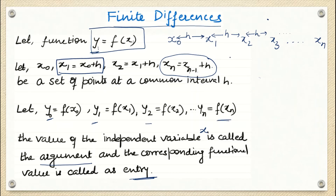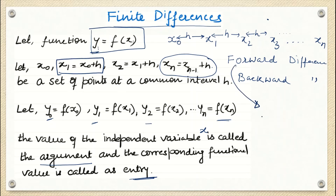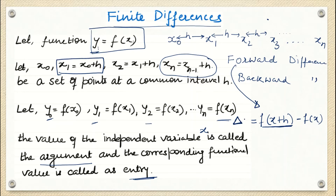Now we are going to deal with two terms: forward differences and backward differences. The general form of forward difference is f(x+h) minus f(x). This is called the forward difference because x+h is on the right-hand side, so we take f(x+h) minus the previous value f(x). We denote this with the forward difference operator Δ, so Δf(x) = f(x+h) - f(x).